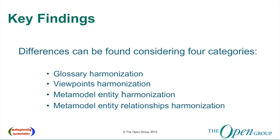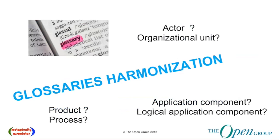Our key findings from the Project Harmony activities are that we certainly discovered differences between the different major areas: the glossary, viewpoints, the metamodel entities, and the metamodel relationships. Without any further ado, I'm going to introduce Serge Thorn and let Serge talk about some of the work that he's been doing — not only with the Project Harmony work, but as one of the leaders of the localization committee, which is trying to create country-specific translation glossaries for TOGAF and also for Archimate. Serge, go ahead and tell us about the glossaries.